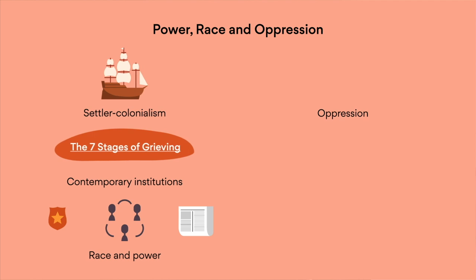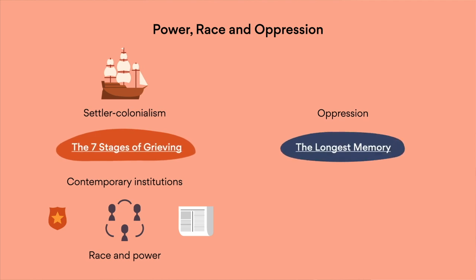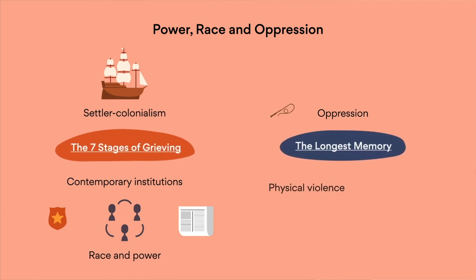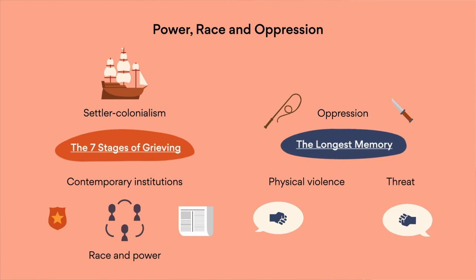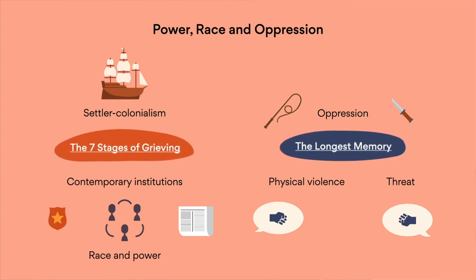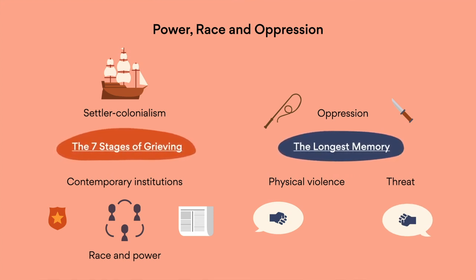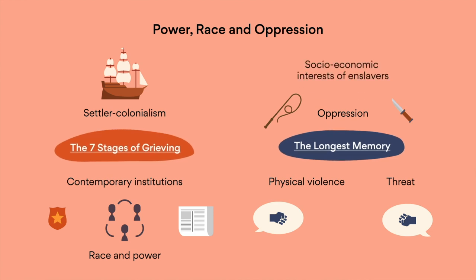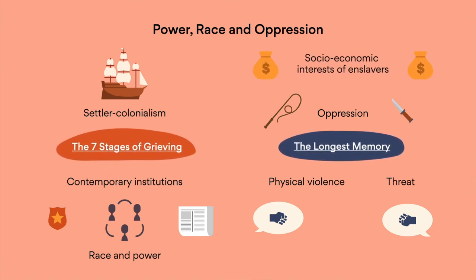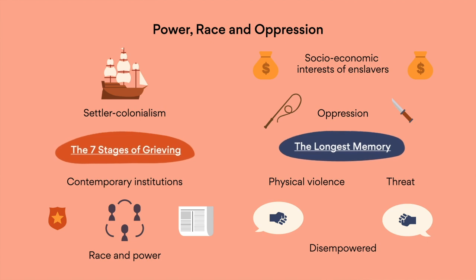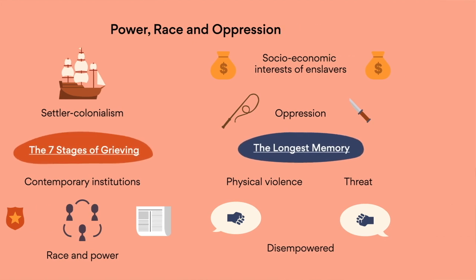Oppression is similarly maintained in The Longest Memory, where physical violence, and even just the threat of possible physical violence, is used to enslave African Americans. Plus, all of this racial violence was justified by the socio-economic interests of enslavers. Both texts see black people disempowered by a range of white institutions.